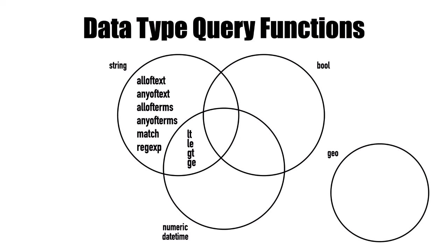For numeric and datetime functions, we have comparisons: less than, less than or equal, greater than, greater than or equal — these can also be applied to strings. There's also equality, which you can use for booleans, numeric, datetime, and strings. For geo data, there are specific geo functions: near, within, contains, and intersects — all using GeoJSON format for geo support.